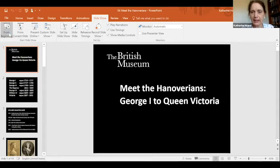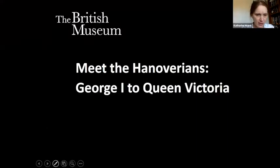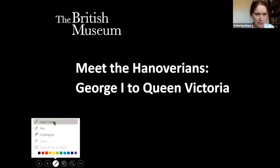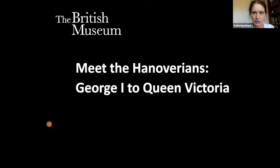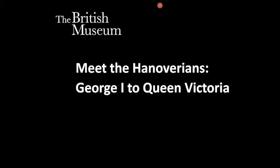Starting from the beginning — always a good place to begin. I will, as usual, pick up my little laser pointer because there are a few little details we'll be looking at during the course of our talk. We are going to be meeting the Hanoverians, a series of kings and queens who ruled Britain from George I through to Queen Victoria.